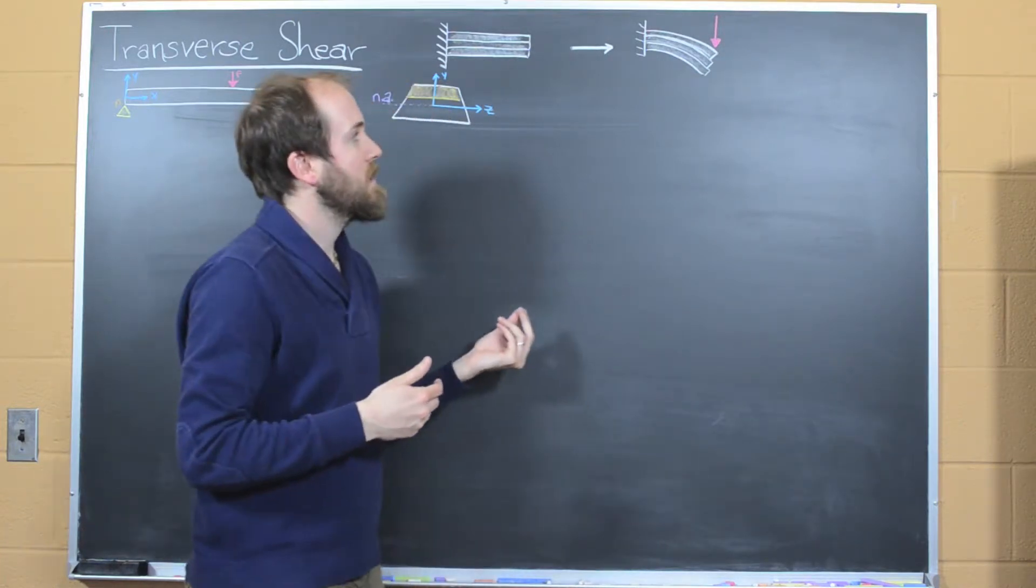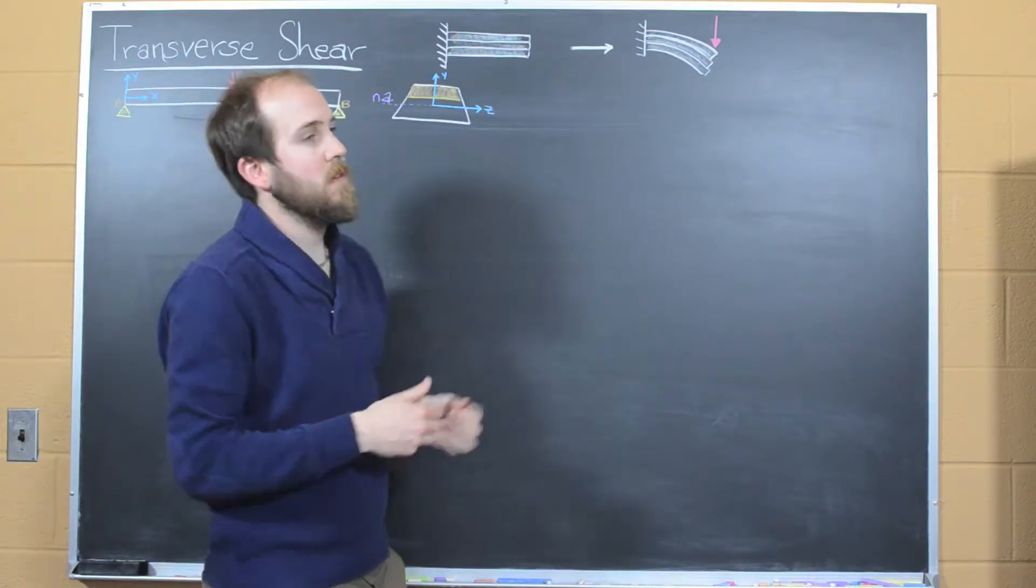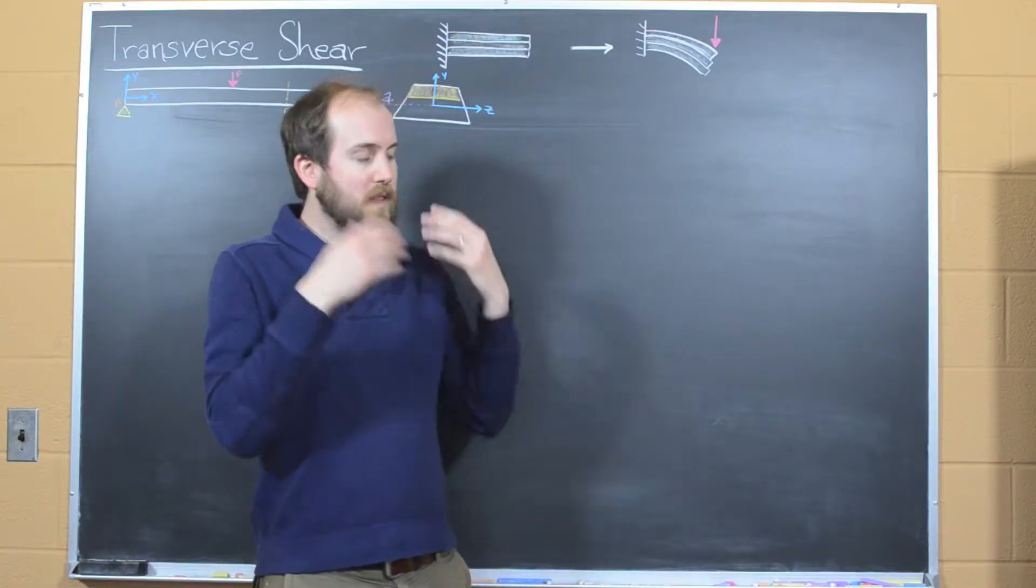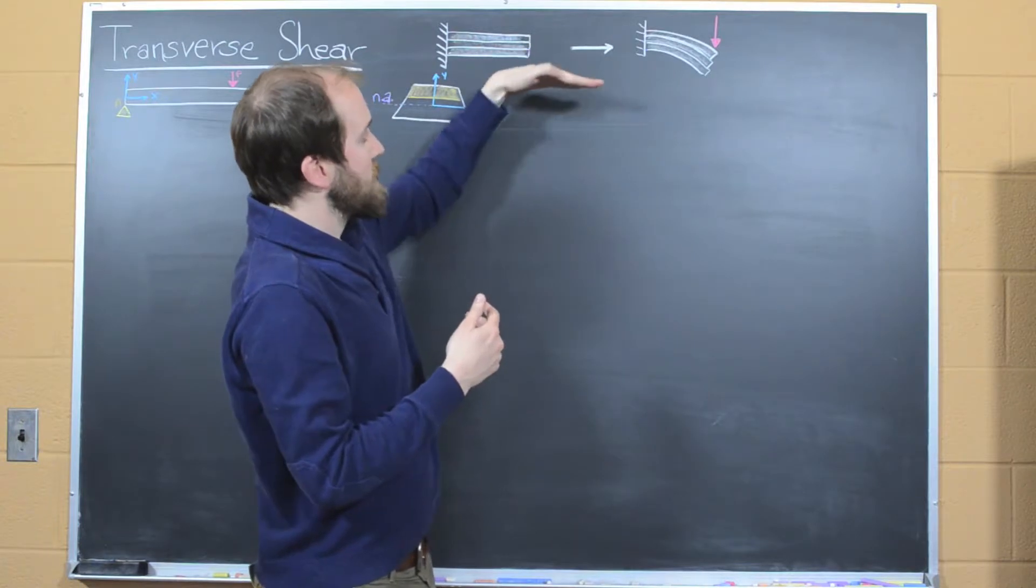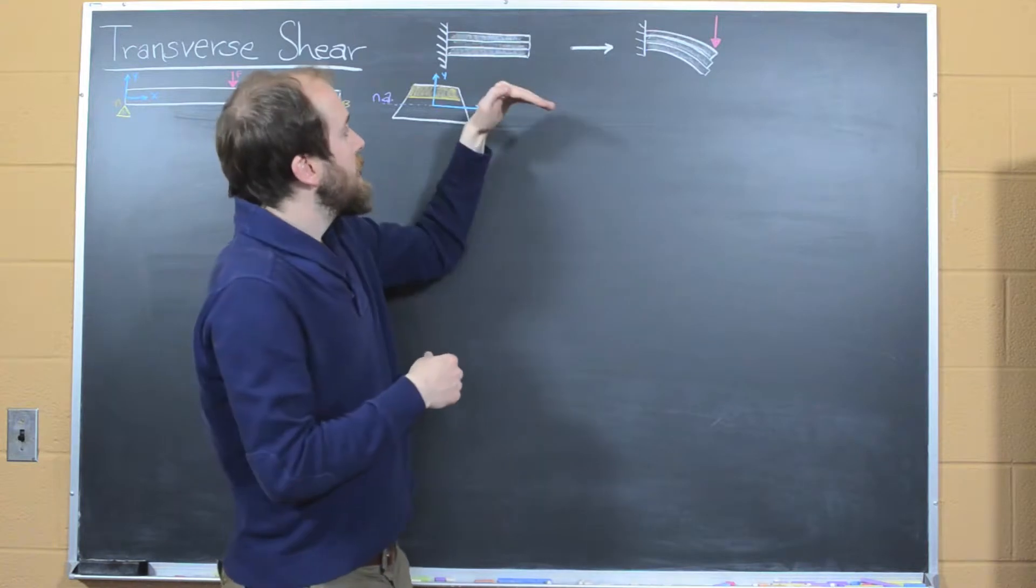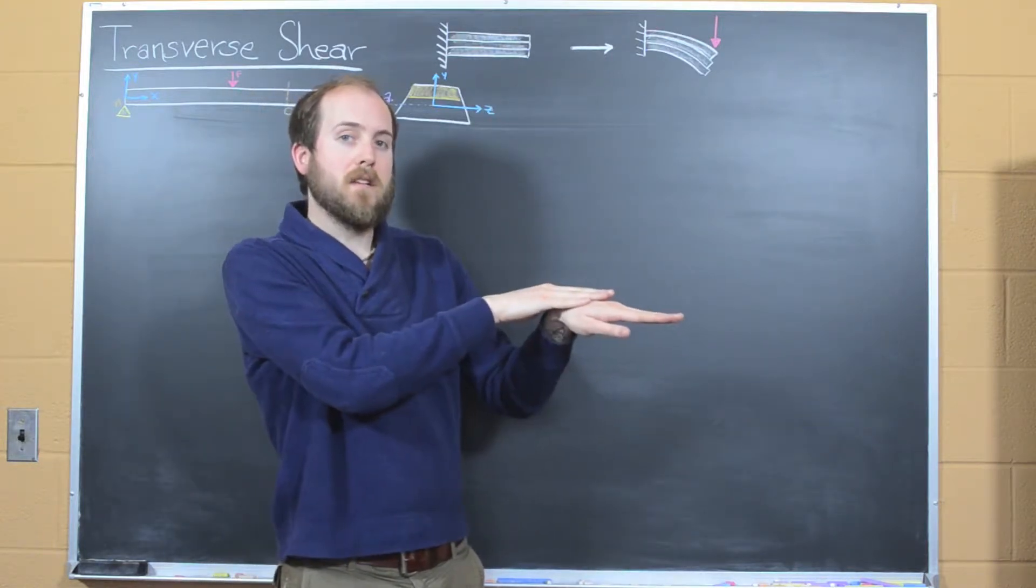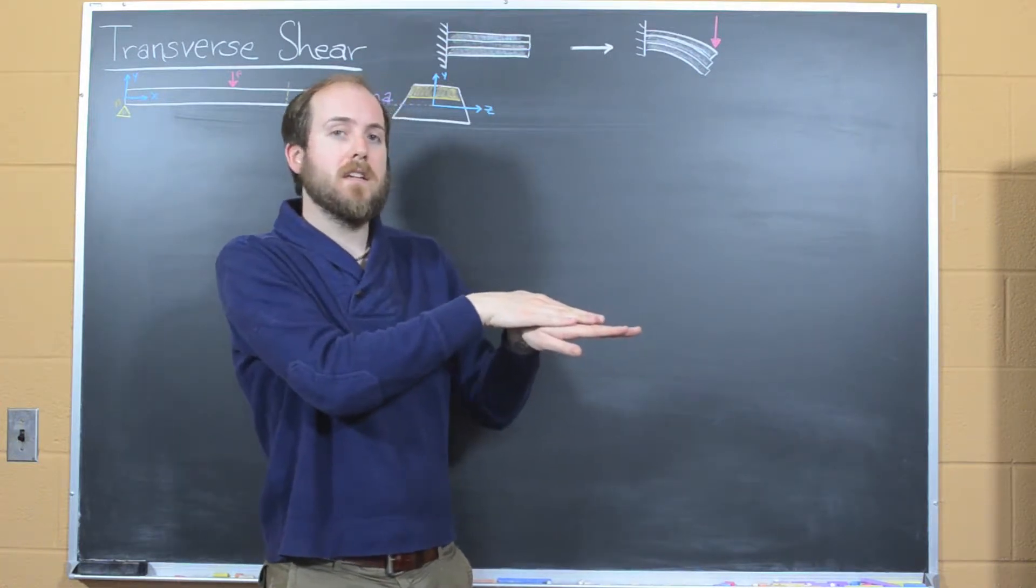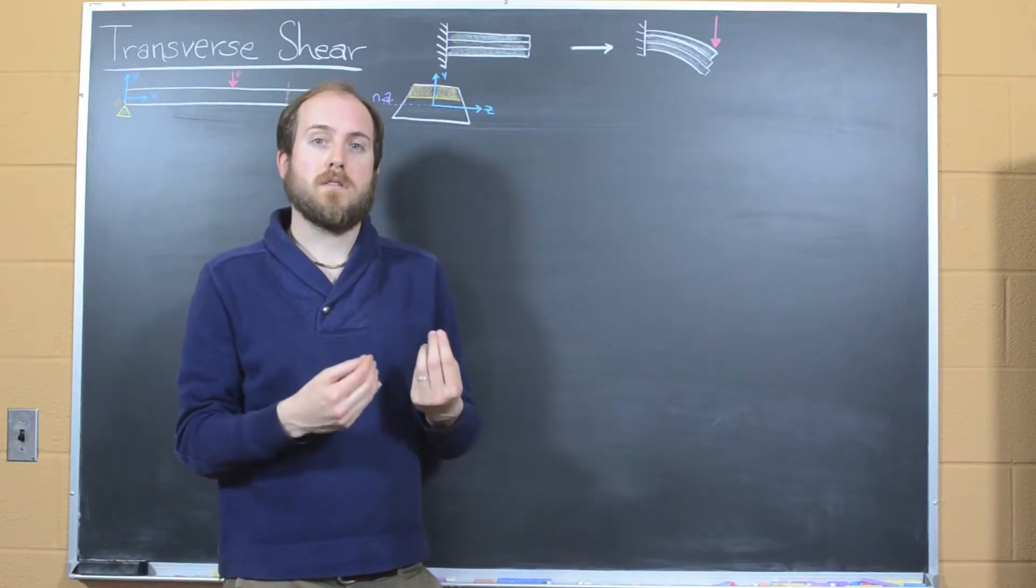In a real structural element, this doesn't happen, right? This thing bends in the similar way that we've seen cantilever beams bend up until this point. And so what that means is, if each individual slice, and you can imagine these being really infinitesimally thin slices throughout the material, if these slices want to slide past each other from bending, but they can't, they're resisted, there's something that's resisting that sliding.